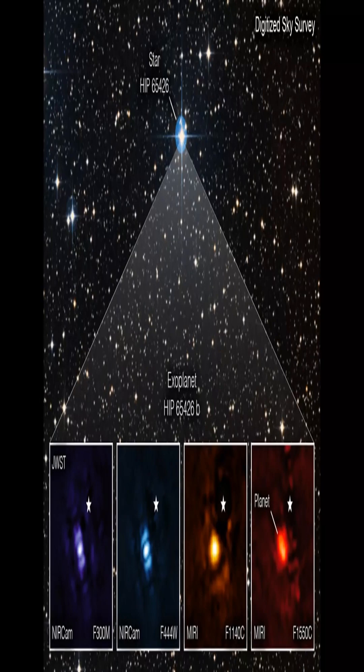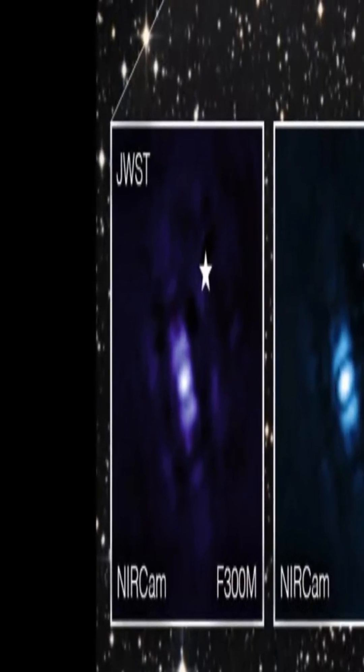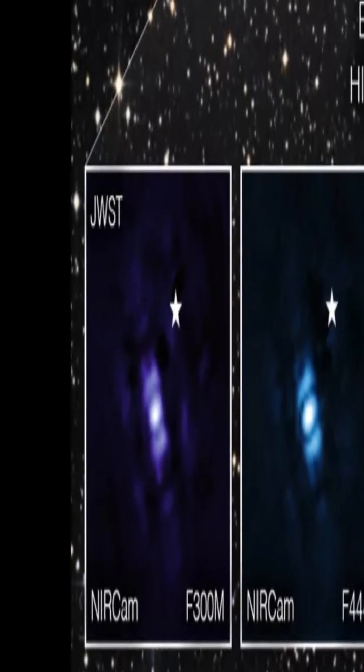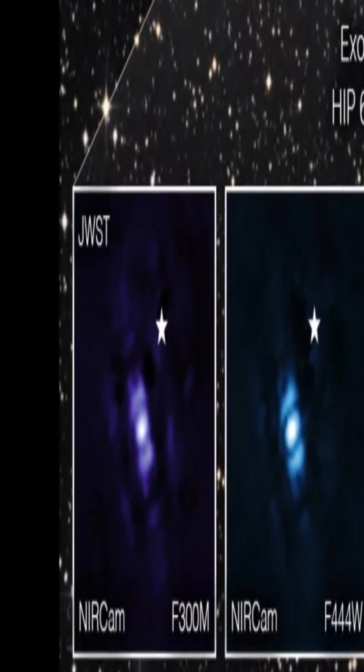The James Webb Space Telescope demonstrated its potential to revolutionize exoplanet research by capturing the first direct image of a planet orbiting a faraway star.